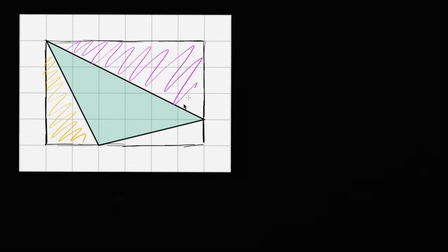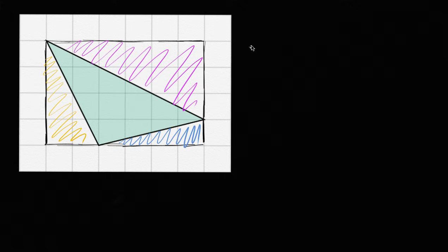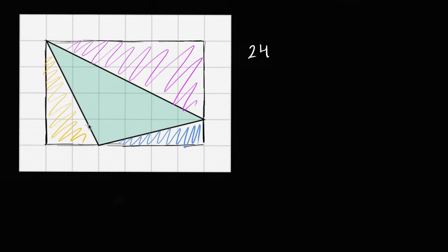So the other way we could tackle it is to draw the broader rectangle around the triangle. As soon as you draw that bigger rectangle, you see that the rectangle is made up of the green triangle we're trying to find the area of, and three other right triangles: a yellow one, a purple one, and a blue one. So if we figure out the area of the entire rectangle and subtract the three right triangles, we'll be left with the green triangle's area.